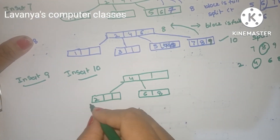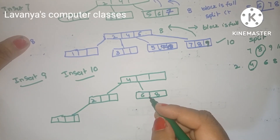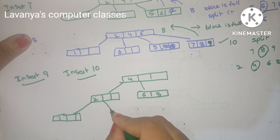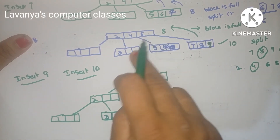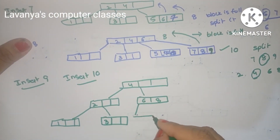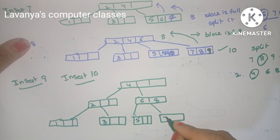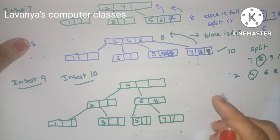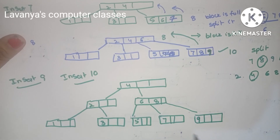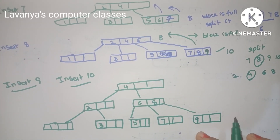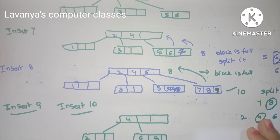Completing the final tree structure: Left of 2 has 1. Right of 2 (and less than 4) has 3. Left of 6 has 5. Right of 6 has 7. Right of 8 has 9, and the new element 10 is inserted to the right of 8. This is the construction of the B-tree.